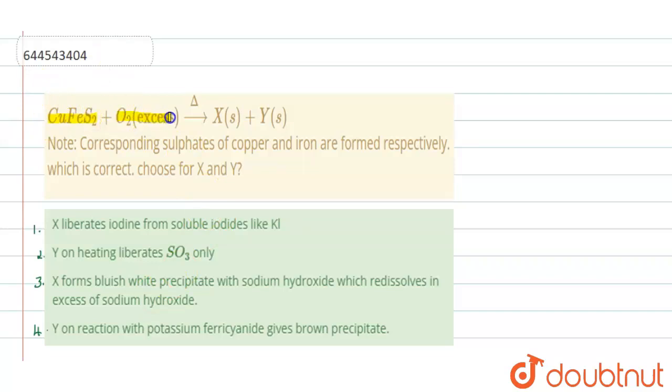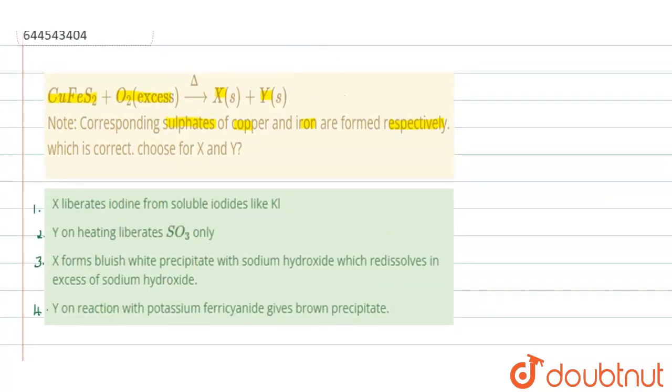When heated, you get two compounds in solid state X and Y. We have to identify this X and Y. Note is given: the corresponding sulfates of copper and iron are formed respectively, which is correct. Choose for X and Y - four options have been given. Now let us solve.